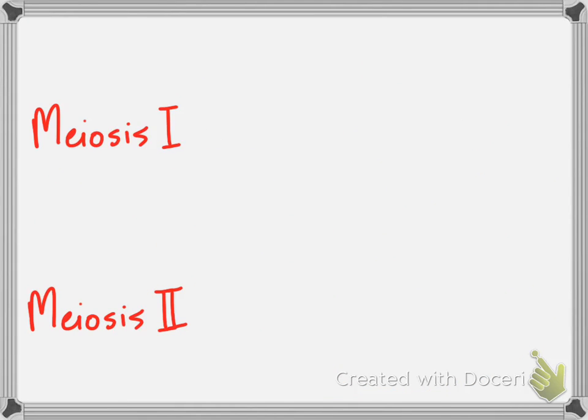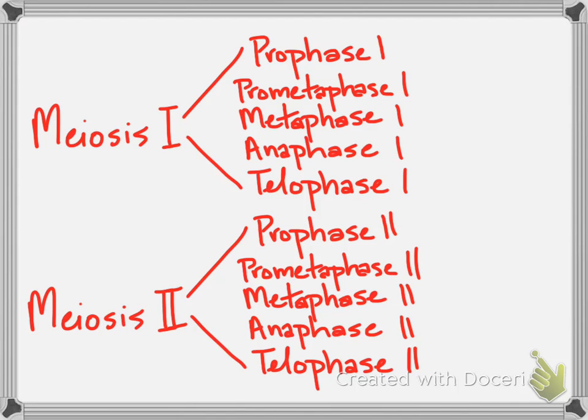The two divisions of meiosis are meiosis one and two. Their phases are all named with a one or a two after each name. Be sure to add the one or the two whenever you're talking about these phases, or I'm going to think you're talking about mitosis.